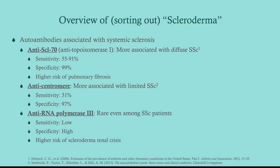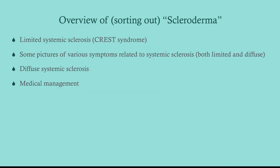There are two really important autoantibodies. Anti-Scl-70 is more associated with diffuse systemic sclerosis, whereas anti-centromere is more associated with limited systemic sclerosis. Then there's anti-RNA polymerase, which is rare even among these patients, but if they have it: number one, it is extremely specific, and number two, it portends a higher risk of scleroderma renal crisis.